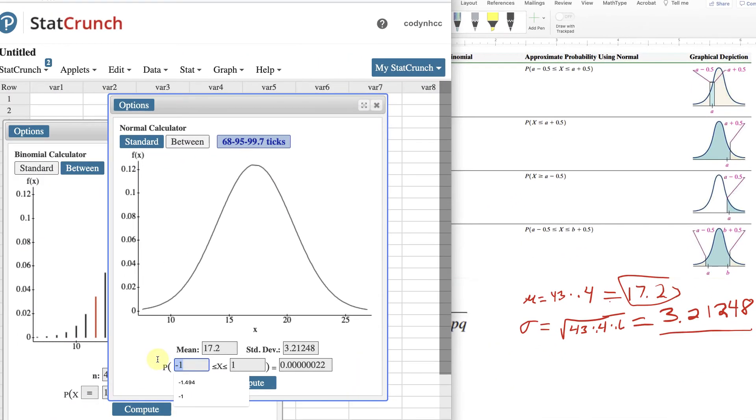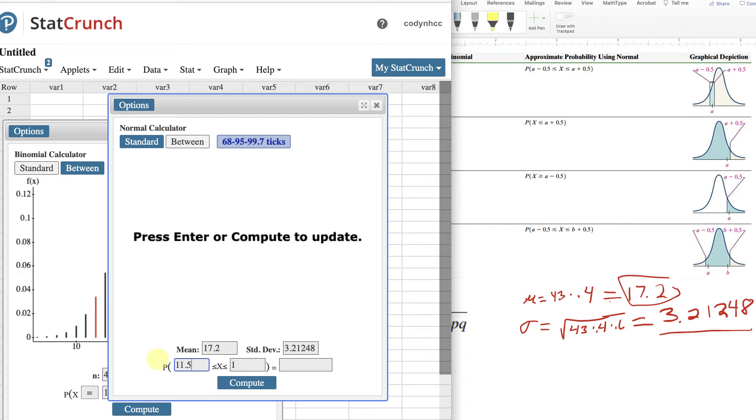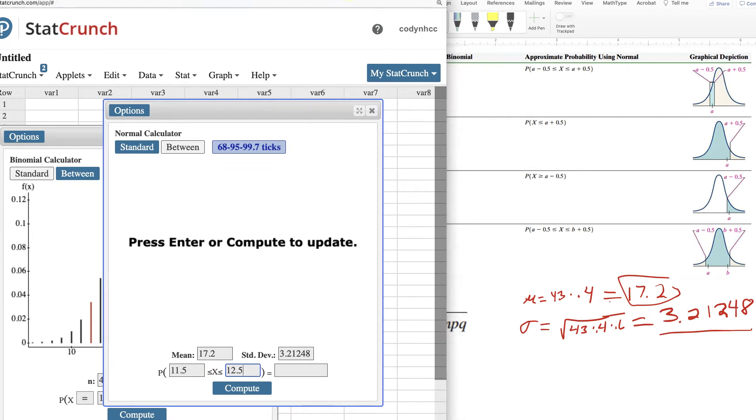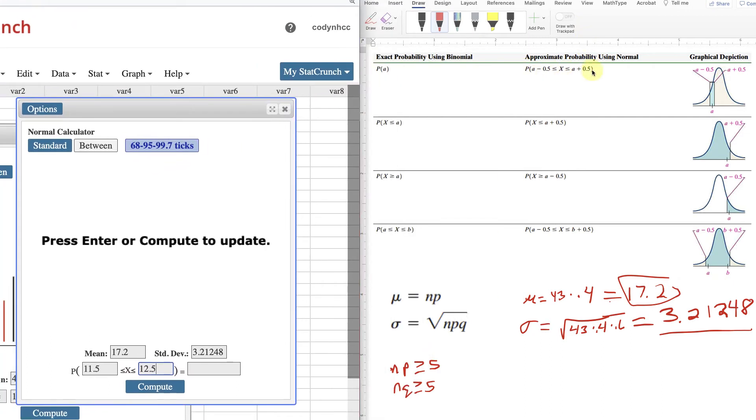So if we wanted 12, it would be 11.5 to 12.5. That is one unit. And that's what we're looking for, one unit. 12.5 minus 11.5 is one unit. And so that's the in-between, or saying one value. You have to do an in-between. And luckily, StatCrunch now has the in-between before it didn't have that.